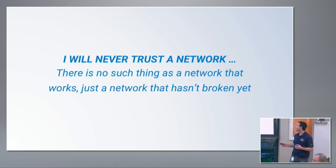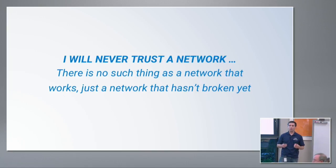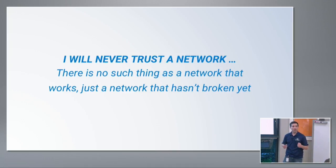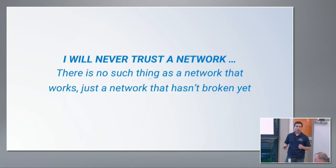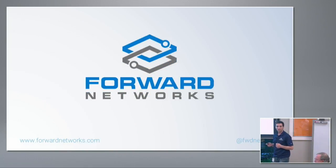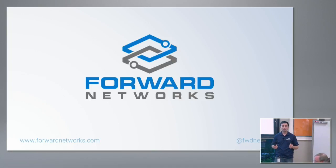I want to bubble up for a second. When I first started working at Forward, friends and colleagues would say: "I'll never trust a network" — or more explicitly: "There's no such thing as a network that works, just a network that hasn't broken yet." For decades, people have been conditioned to think any change you make will cause an outage, and that latent misconfigurations are always lurking. At Forward, we don't think that has to be the case. We want to help network engineers build networks they have confidence in and can trust, because they've verified them — leading to safer, more robust, and more reliable networks. Thank you.